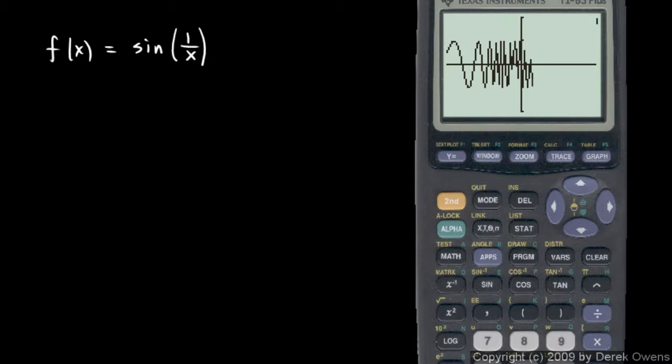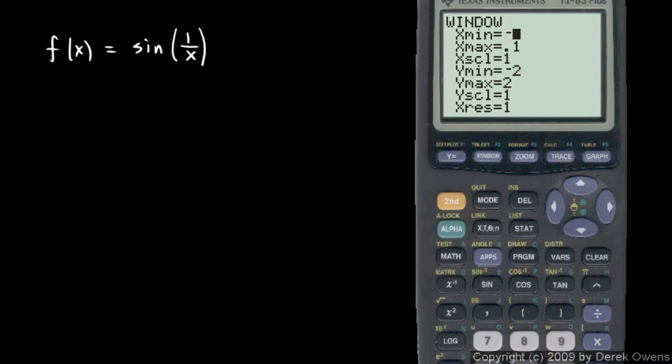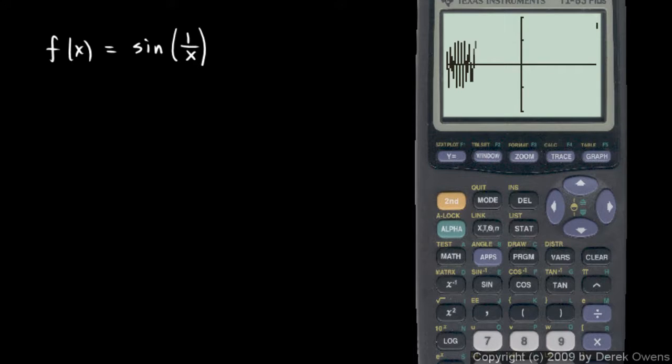Let's see what happens near the origin. We still can't see much. Let's zoom in a little bit more. I'll go back to my window and I'll do negative 0.01 and positive 0.01, and graph that.